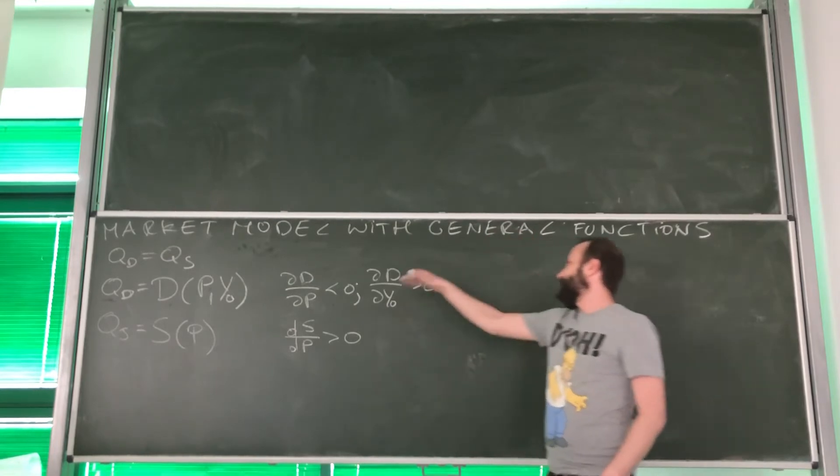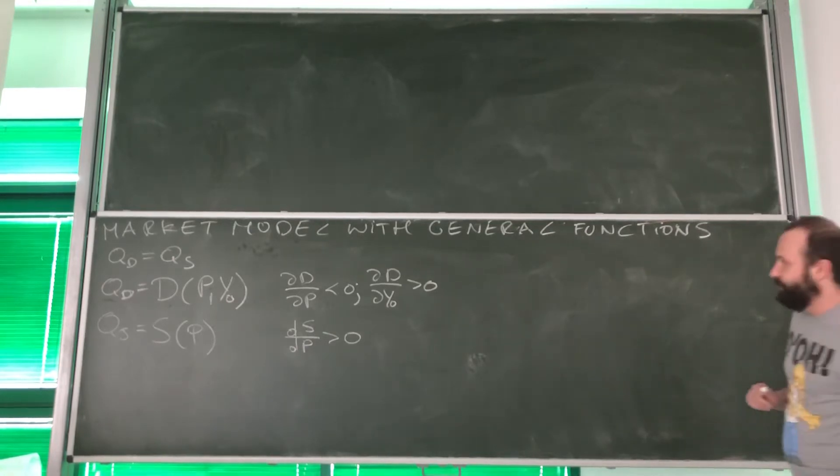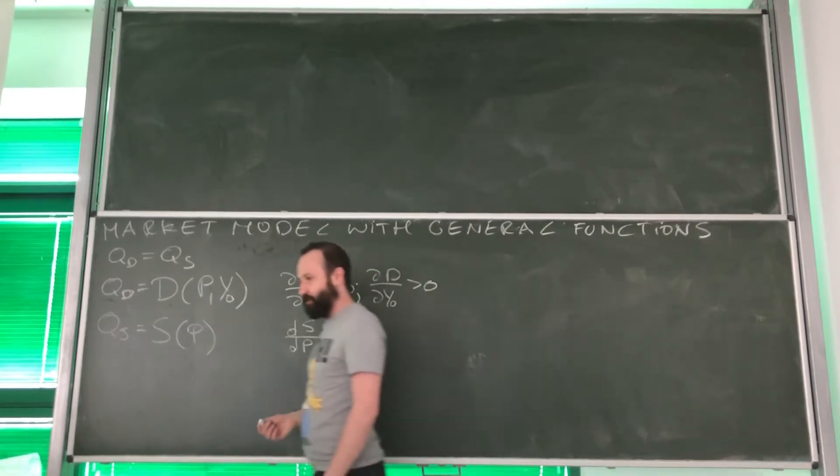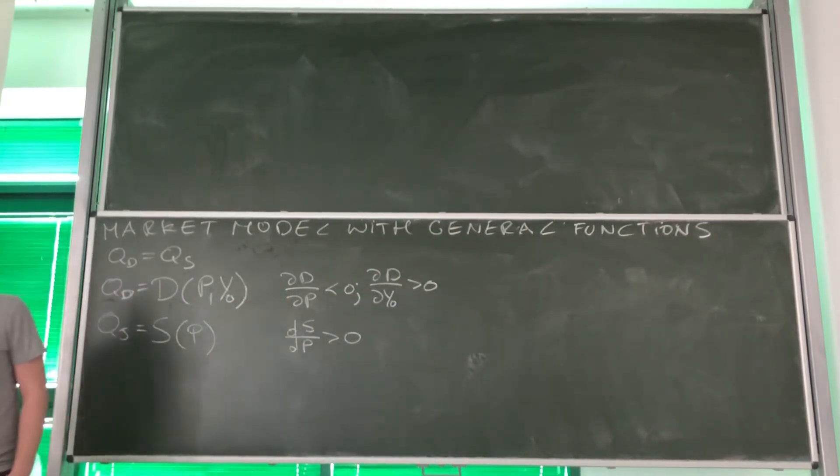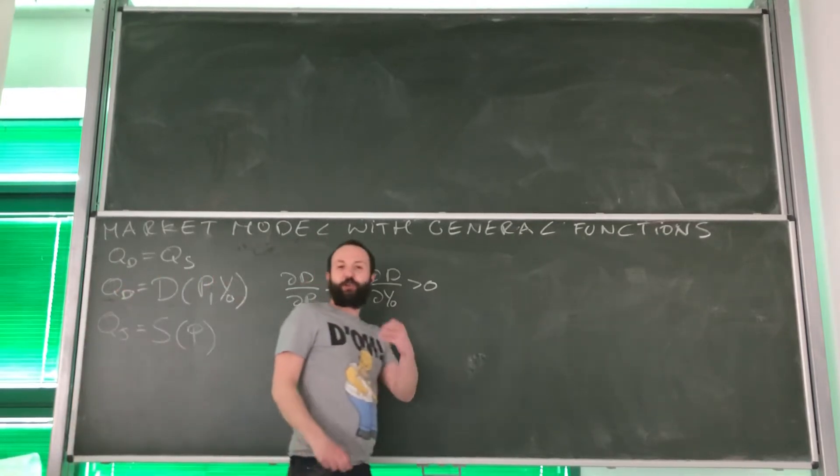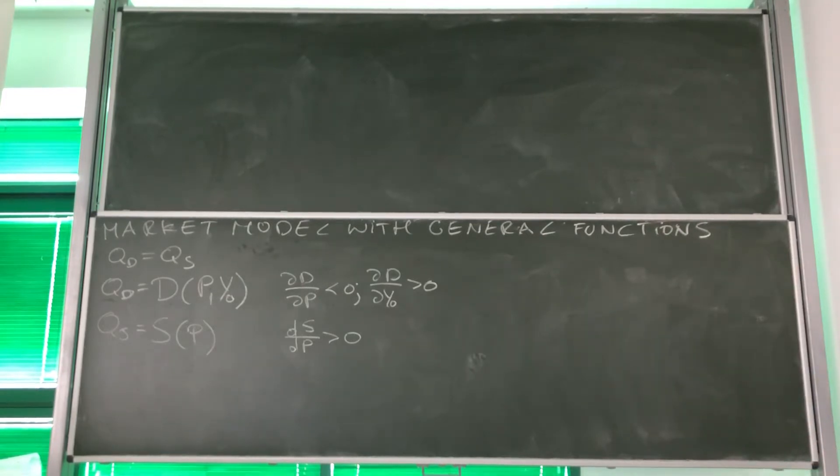Second is that the higher the income, the higher the demand, right? Positive derivative. What is this telling us? It's telling us that demand increases with income, which also tells us that the good we are considering is either normal or luxury, but definitely it's not inferior.